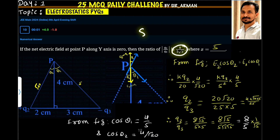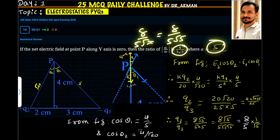Comparing with the given expression 8 by 5 root x, we get 8 by 5 root x equals 8 by 5 root 5. Therefore x equals 5.